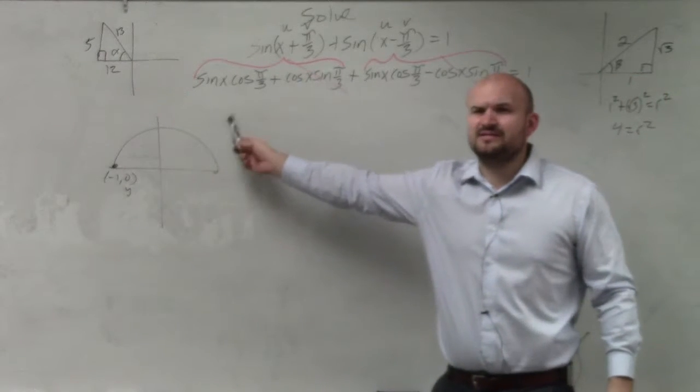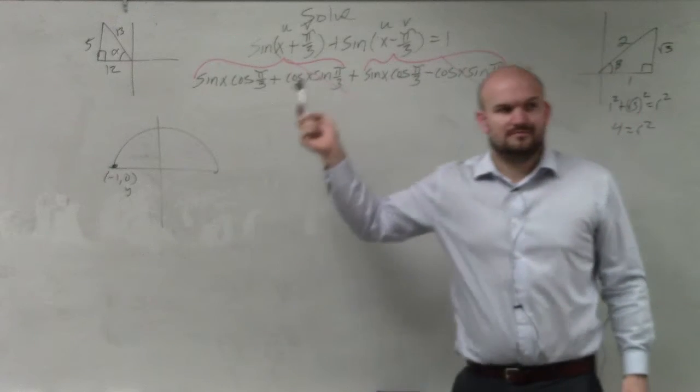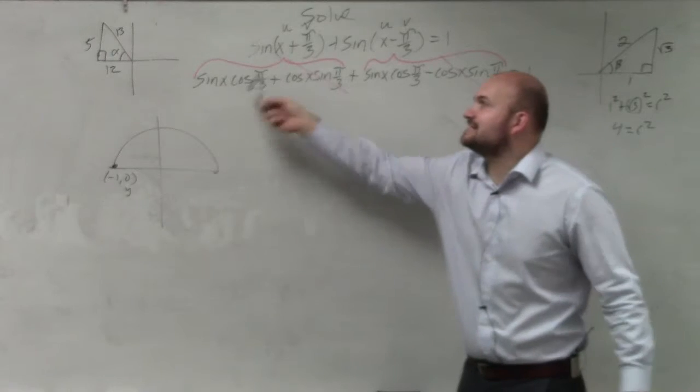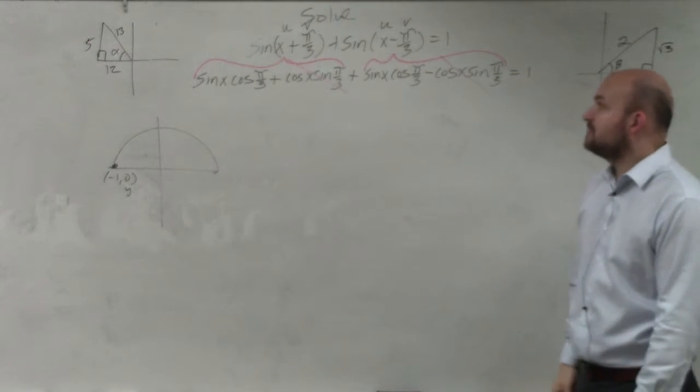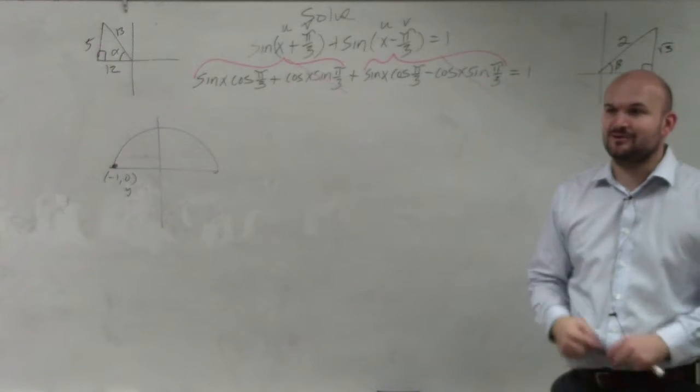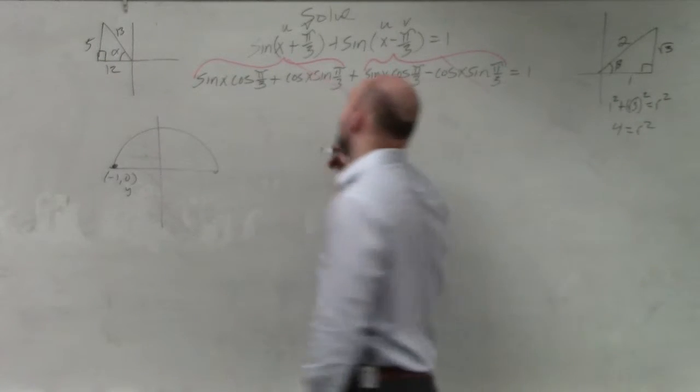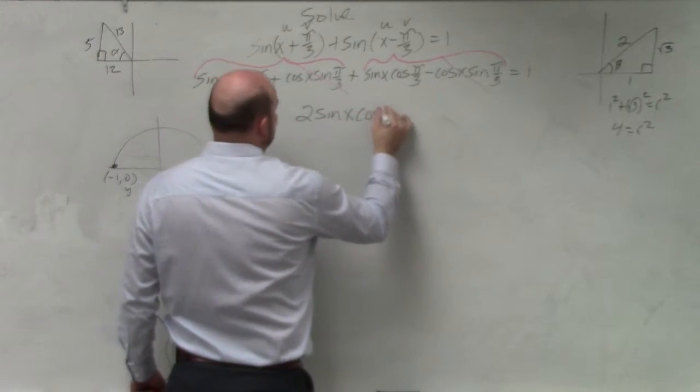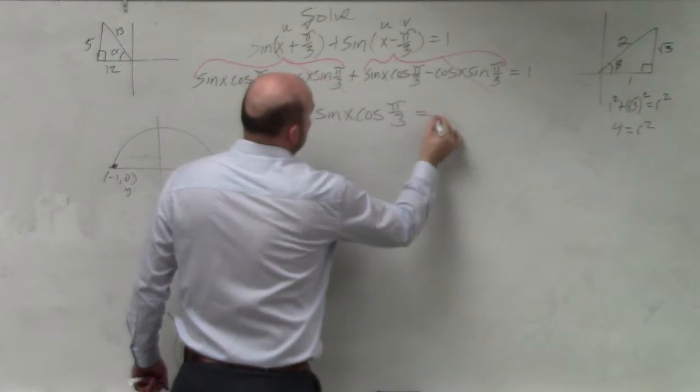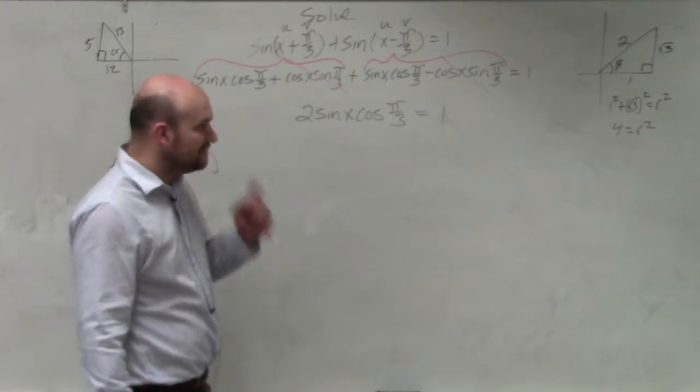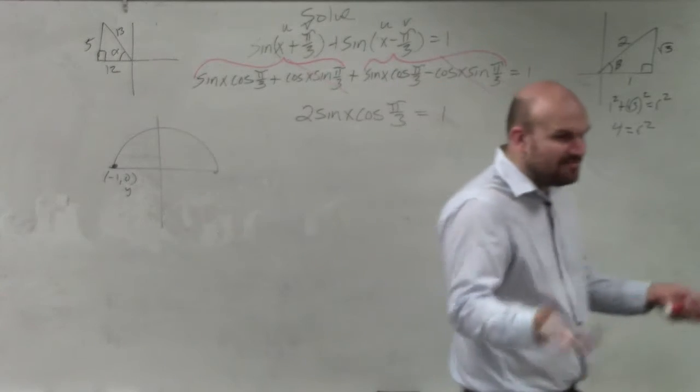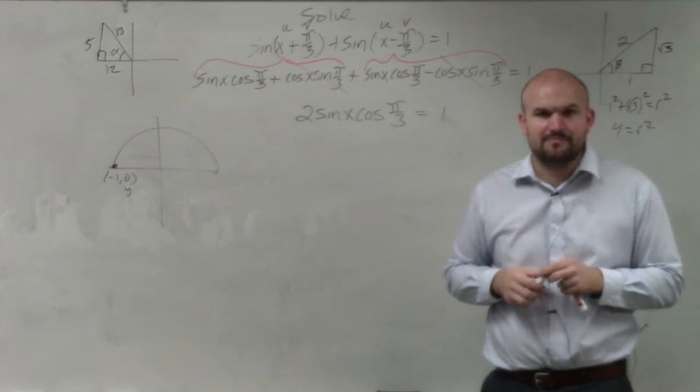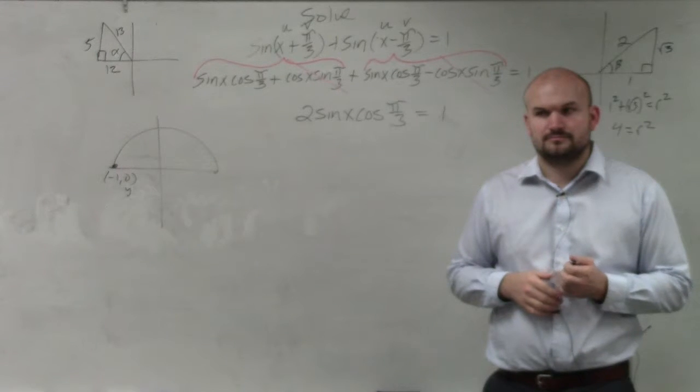And guys, what's x plus x? X squared. Close. x plus x is 2x. x times x is x squared. So what do you think sine x cosine pi over 3 plus sine x cosine of pi over 3 is going to equal? 2 sine x cosine pi over 3. But if you have two of the same quantity, then yeah, you just combine them. If you have two of them, you just combine them.